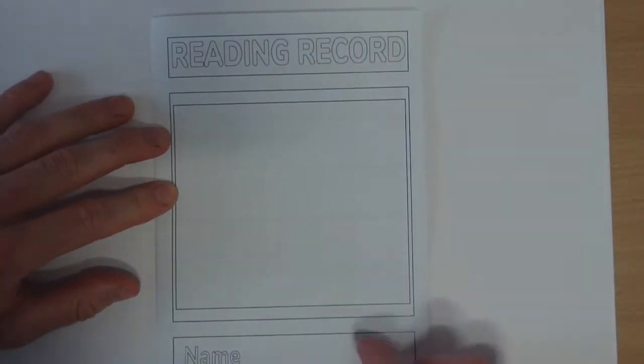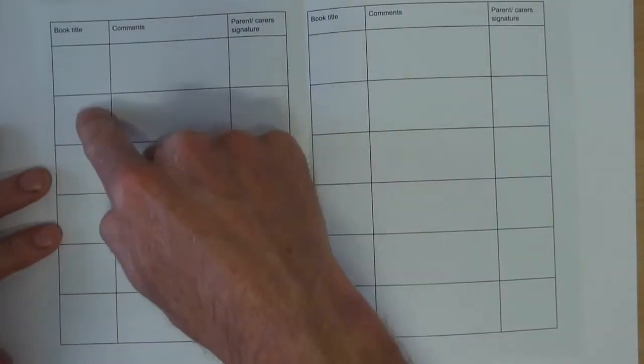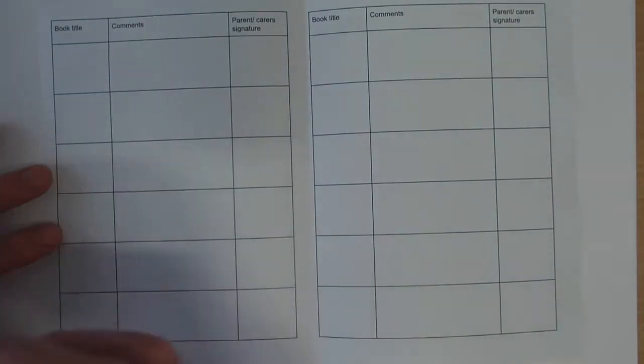You can draw a picture, you can write your name, we don't have to, that's just if you want to. The main thing for this is inside you keep a record of all the books you read over the summer.